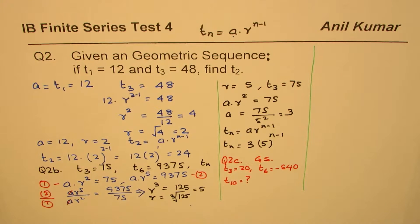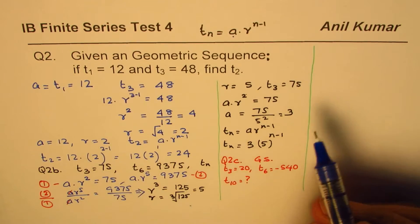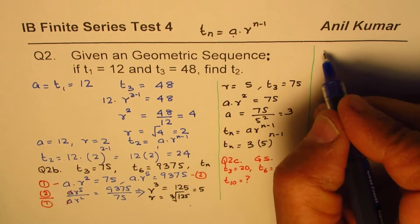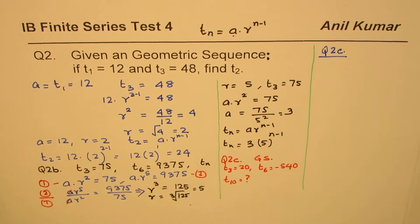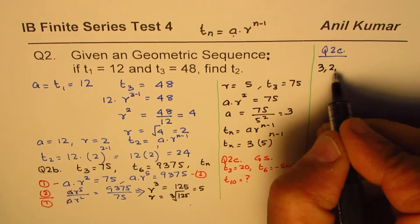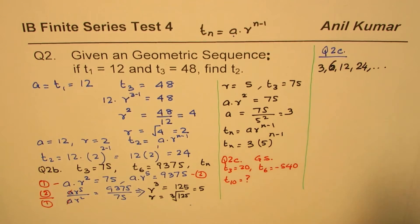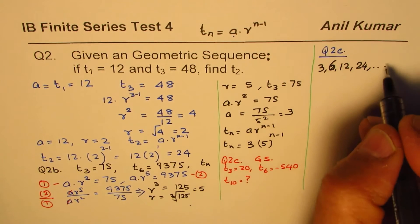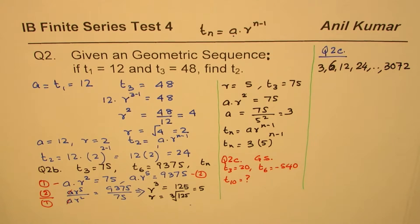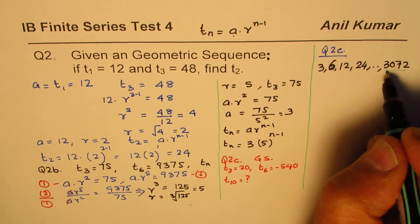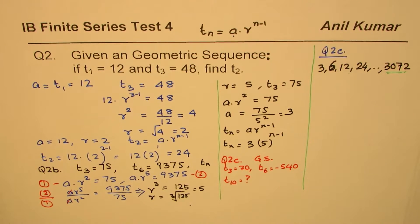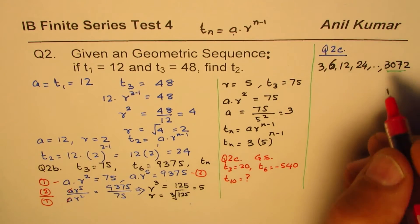Let me also discuss an alternate type of question for geometric sequence — also question 2c. Consider the geometric sequence: 3, 6, 12, 24, and so on (multiplying by 2 each time). The number 3072 appears — you need to determine whether this number is in the sequence, and if so, find its term number.